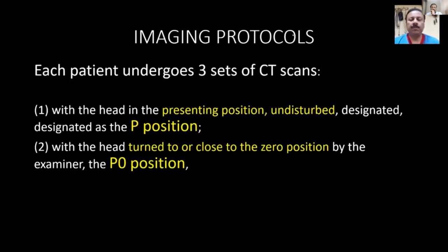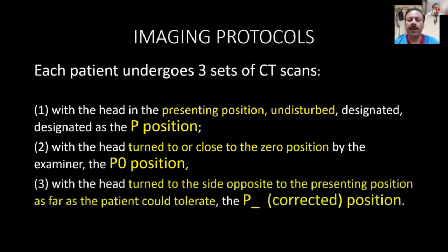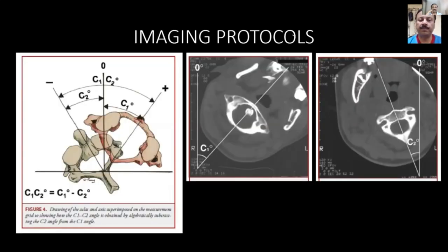The imaging protocols were also put forward by Takking Bang. Three sets of CT scans are prescribed: first, the P position — the presenting position with the head undisturbed in a subluxed state; next, the P-zero position — with the head turned close to zero degrees by the attending physician; and finally, the P-minus (corrected) position — with the head cranked to the opposite side to the tolerable limits of pain. The C1-C2 angulation is calculated as the angle of C1 from the vertical minus the angle of C2 from the vertical.